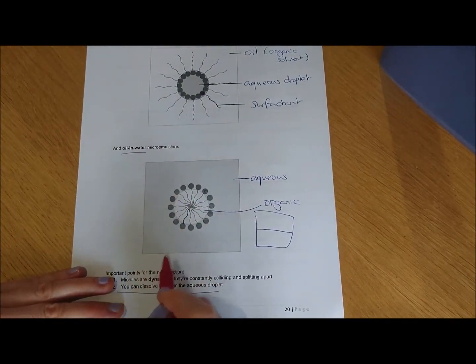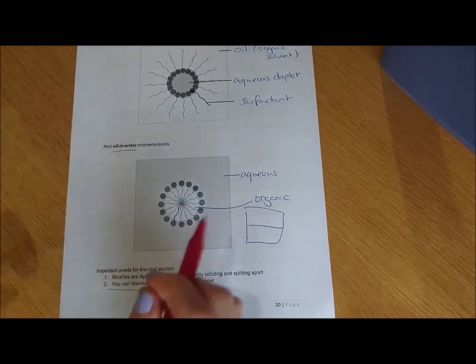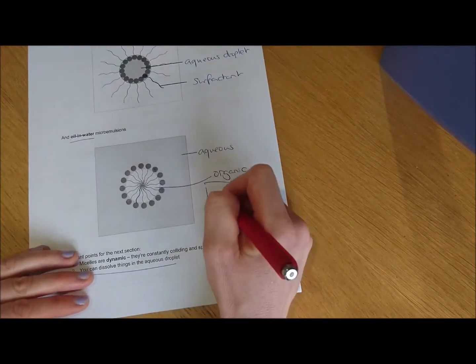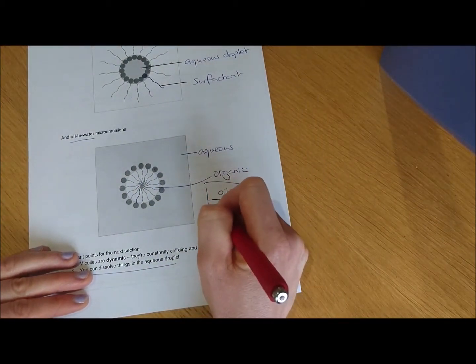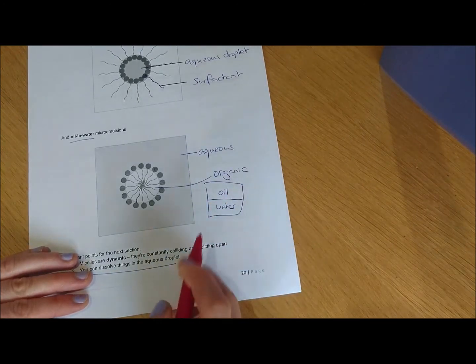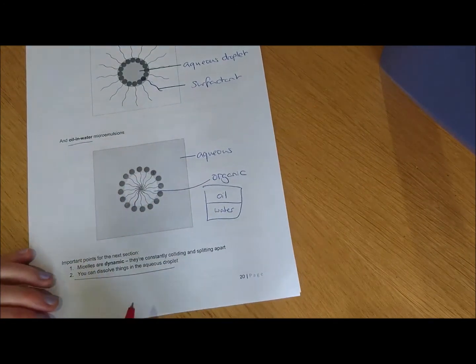And again, they're stabilizing those droplets, preventing them from all coming together, coalescing, and having the whole system separating out into just two phases, one on top of the other like that. So they're stabilizing those droplets.